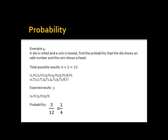The outcomes could be 1 and H, 2 and H, 3 and H, 4 and H, 5 and H, or 6 and H; or 1 and T, 2 and T, 3 and T, 4 and T, 5 and T, and 6 and T. So the probability that the die shows an odd number and the coin shows a head — the expected results is 3: 1 and H, 3 and H, 5 and H. So the probability is 3 over 12, which is also equal to 1 over 4.